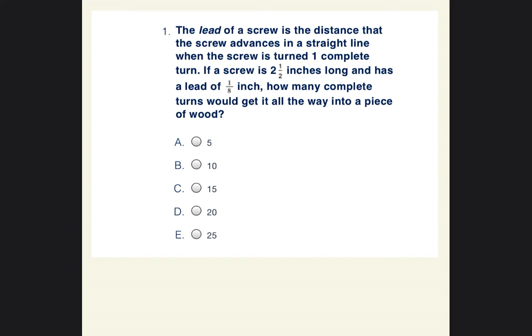It says the lead of a screw is the distance that the screw advances in a straight line when the screw is turned one complete turn. If a screw is two and a half inches long and has a lead of one eighth inch, how many complete turns would get it all the way into a piece of wood?